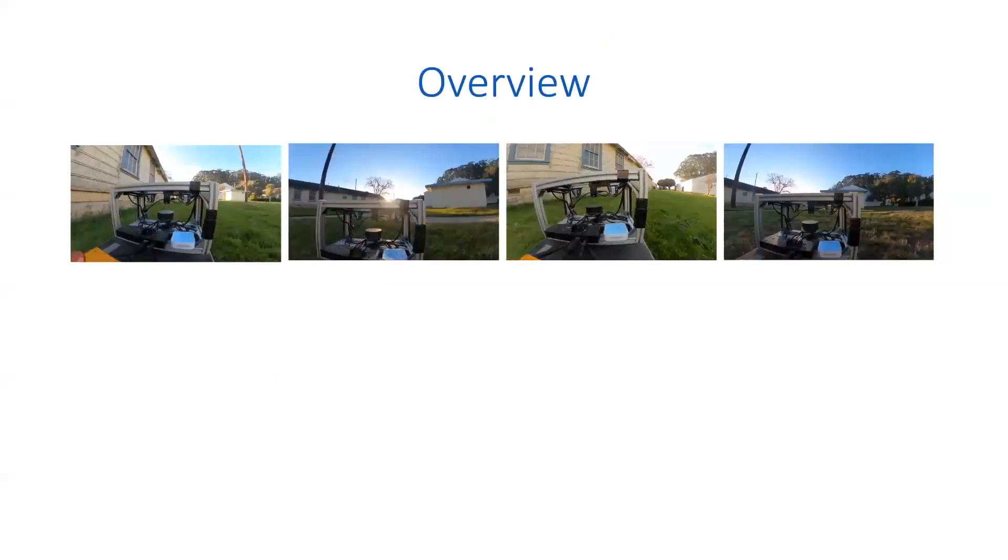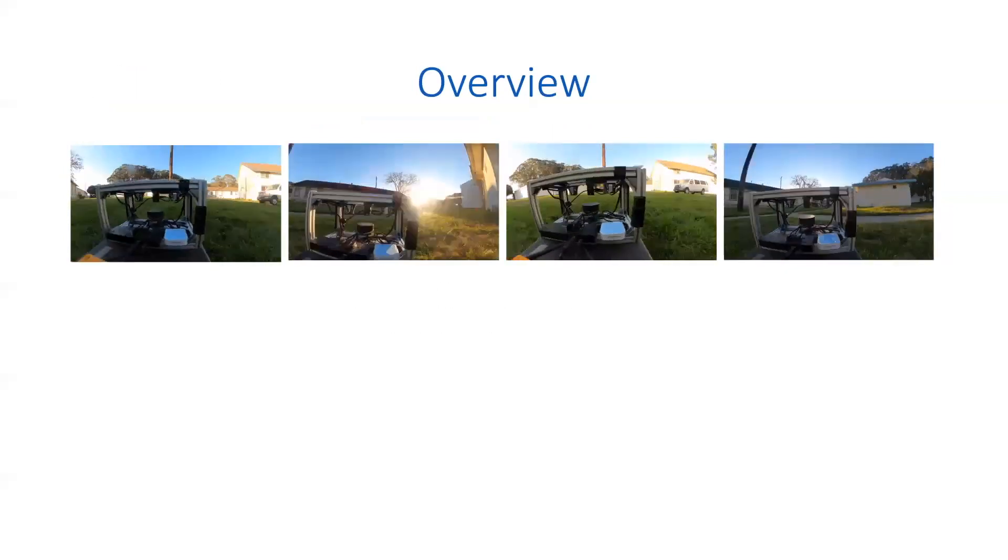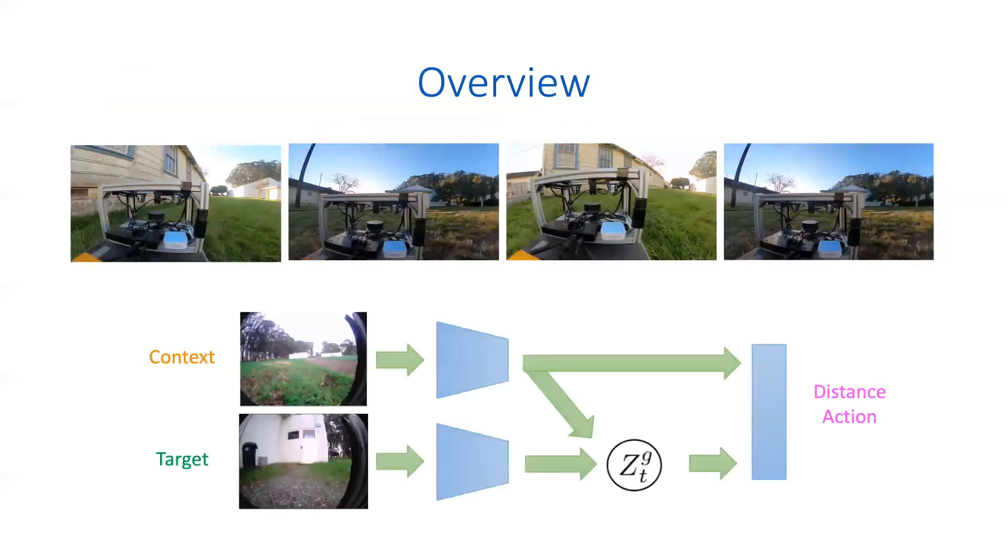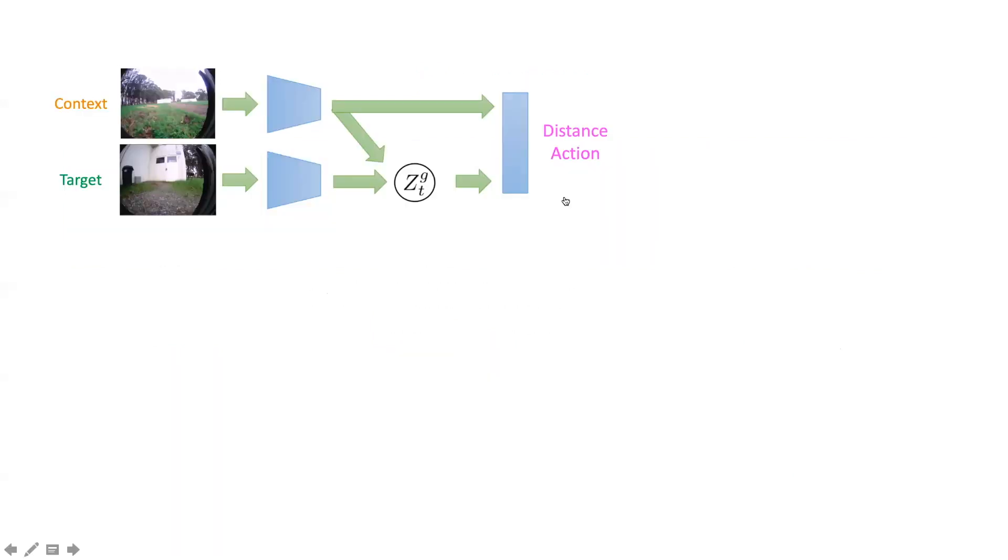During training, we use previously collected experience in a diverse range of environments to learn a context-conditioned latent goal model from a pair of current and goal observations. Our context-conditioned model is trained to predict short-range temporal distances to a goal, as well as the best first action towards it using a variational information bottleneck. Because the training goals are short-range, labels for these predictions can be constructed from any exploration policy.